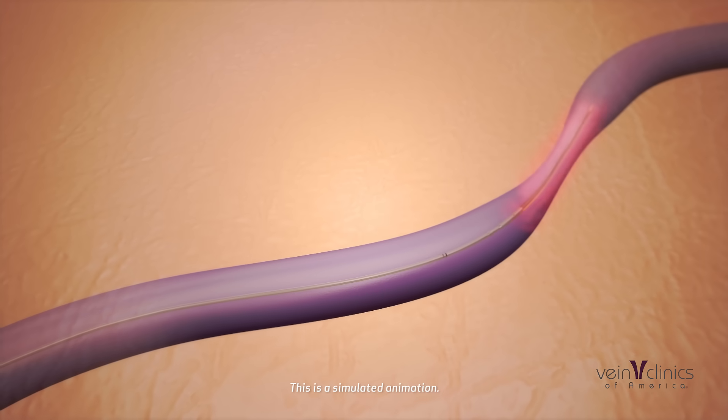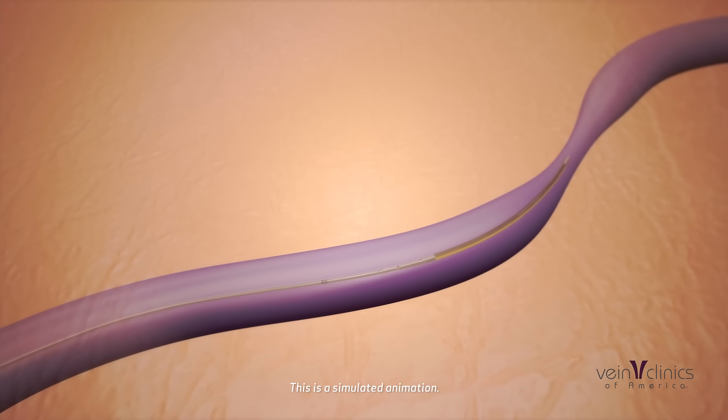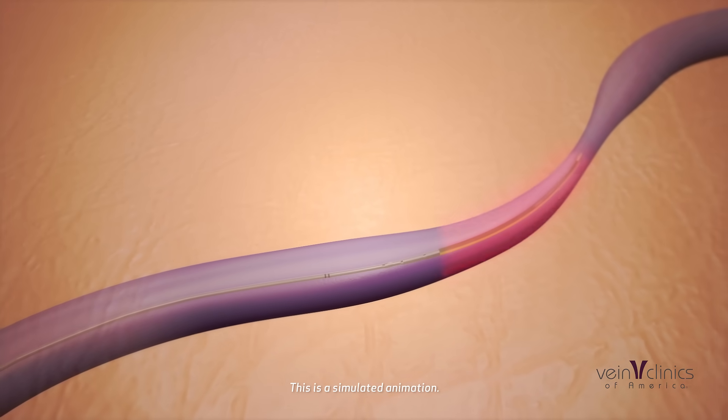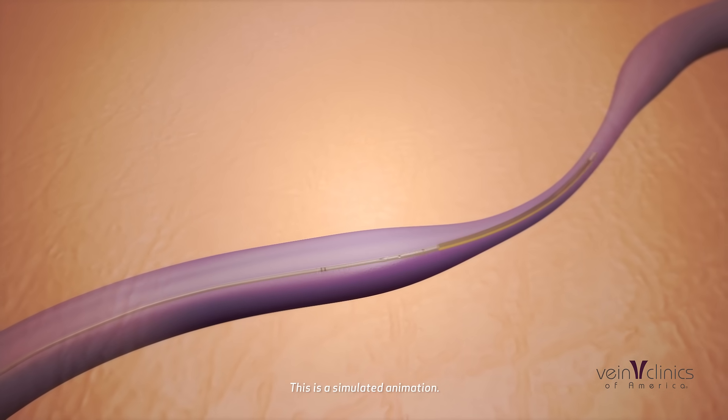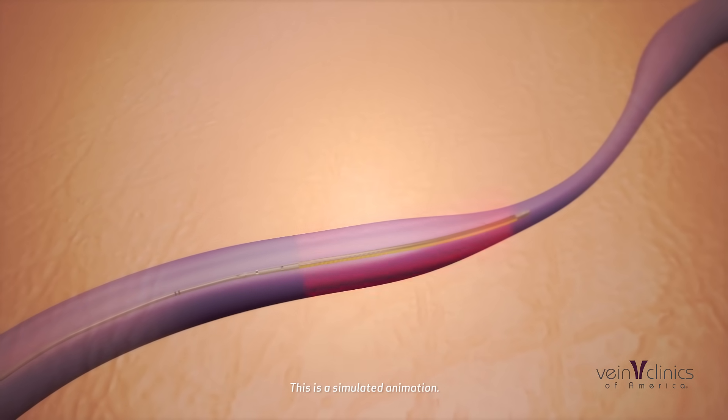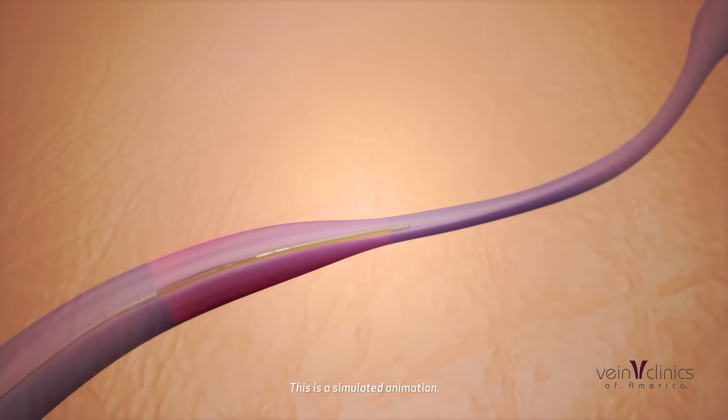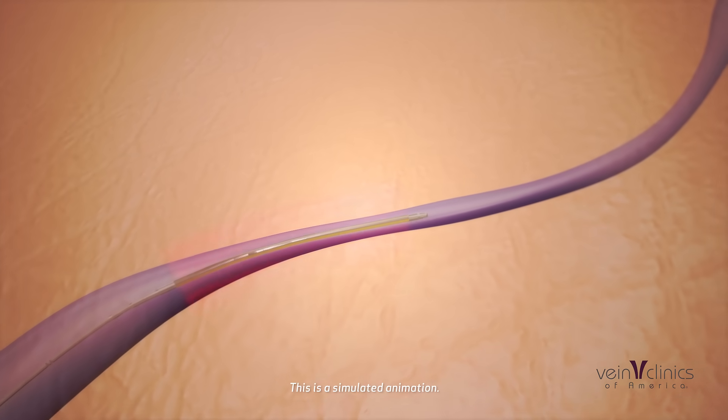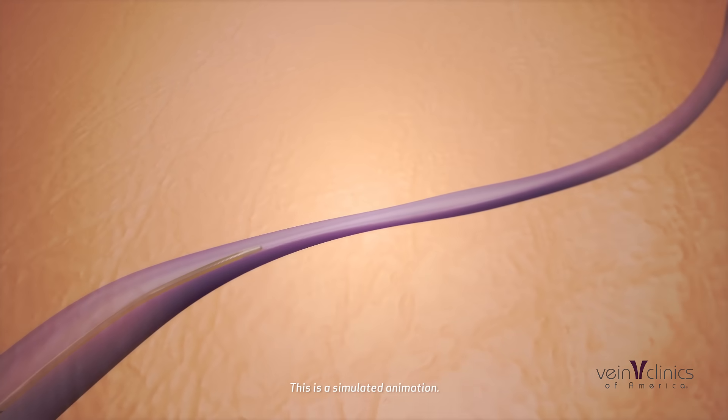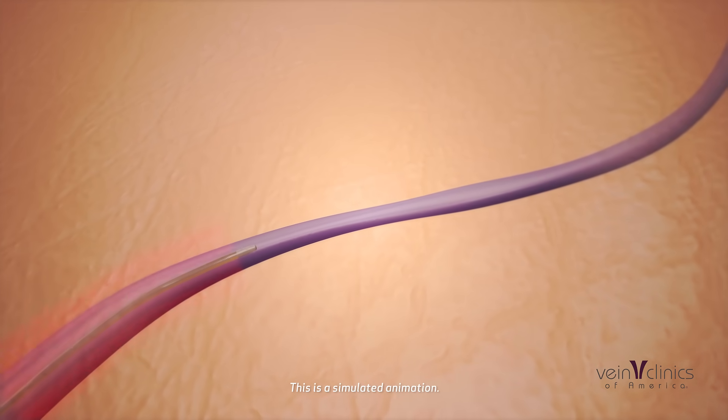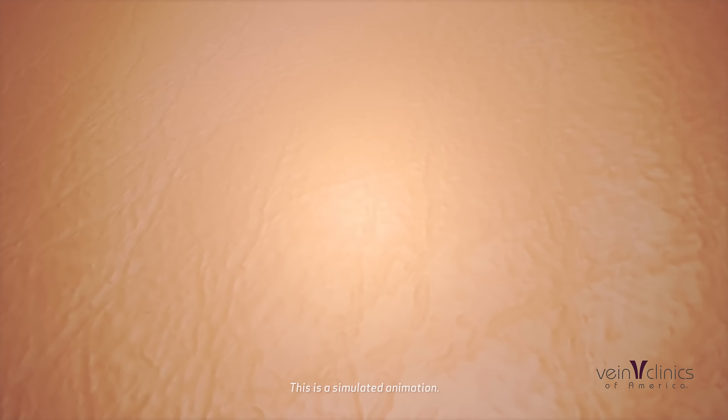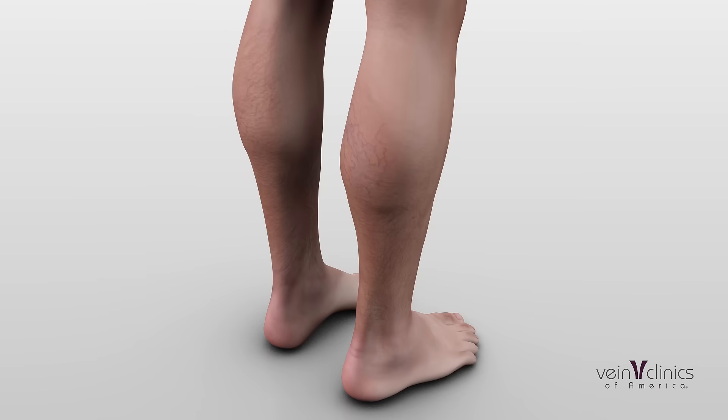Once the vein is collapsed, it is eventually absorbed by your body. Afterward, the blood flow is diverted to healthy veins, improving circulation.